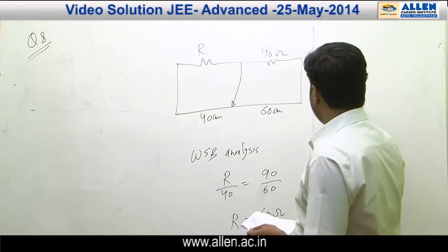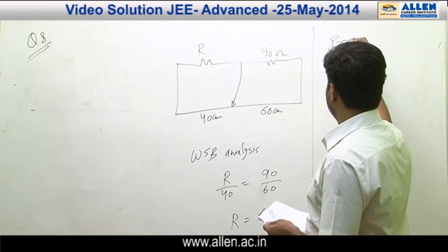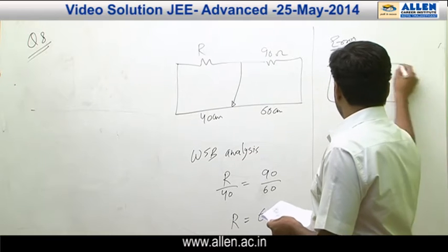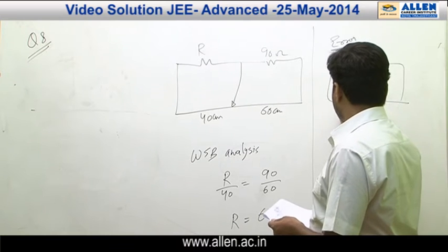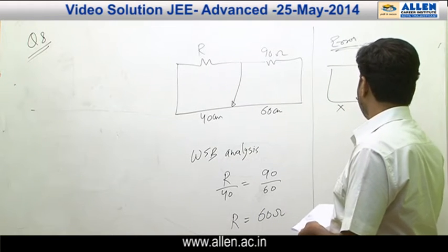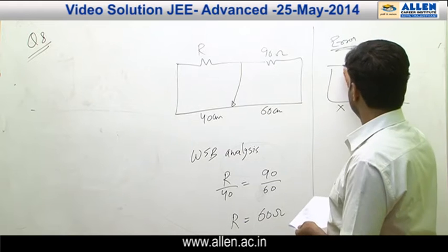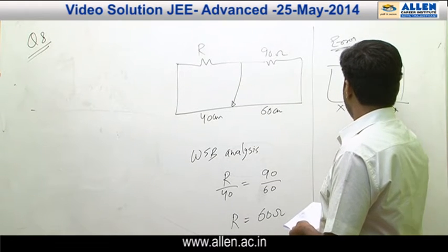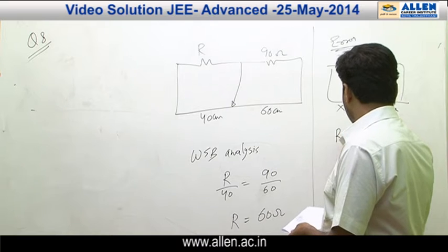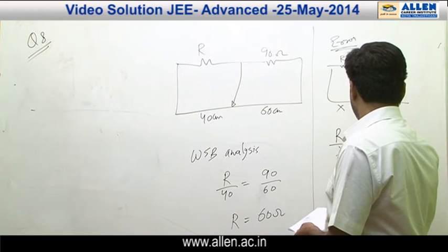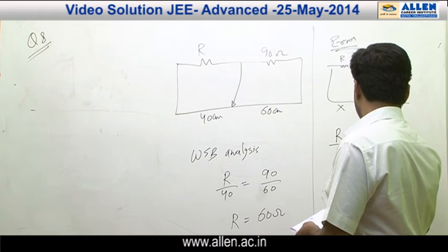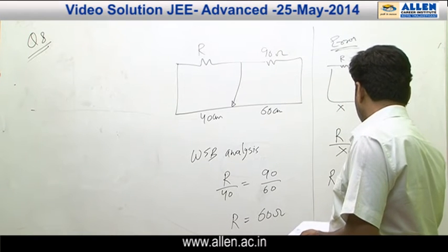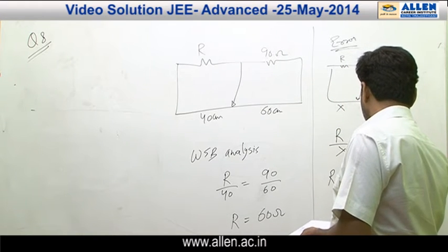Going on to the next part, that is the error part. Let's say the null point was achieved at some distance x, the other would be 100 minus x. If this was to be R and this is to be 90, I should write this as R by x equals 90 by 100 minus x, or rather R equals to 90 into x upon 100 minus x.